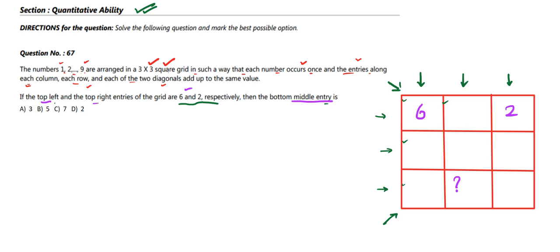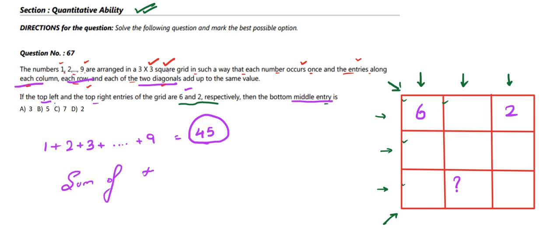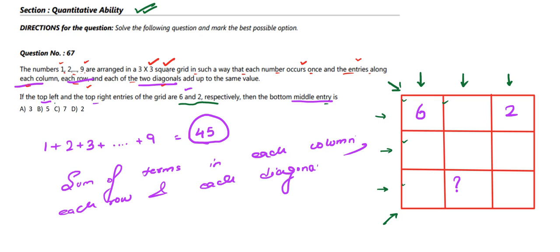We know that the sum of all numbers from 1 to 9 is 45. For this to be equally divided among three rows, three columns, and two diagonals, we divide 45 by 3. So the sum of each row, each column, and each diagonal must equal 15.